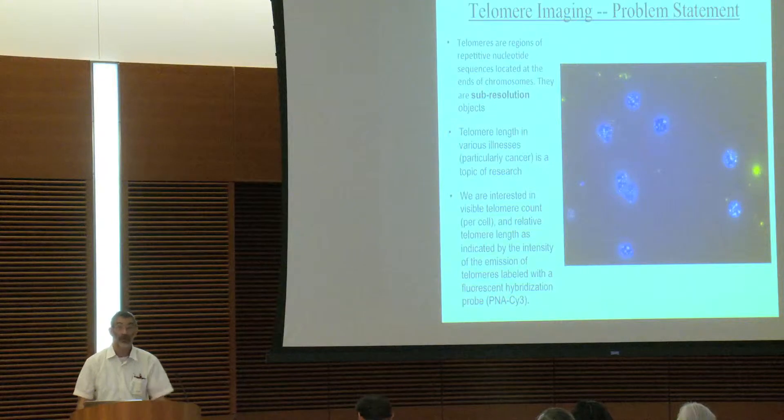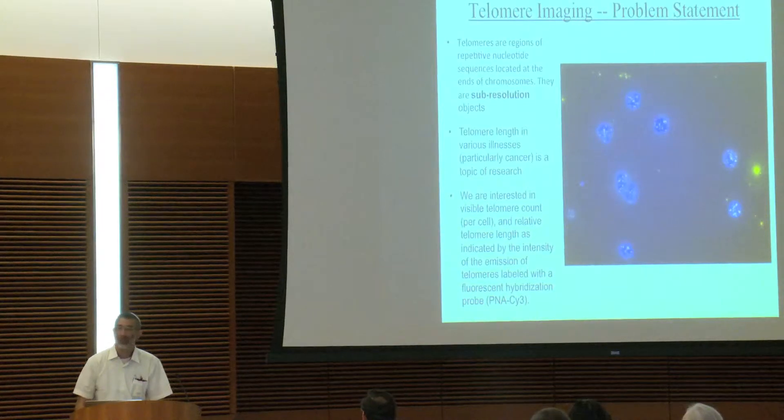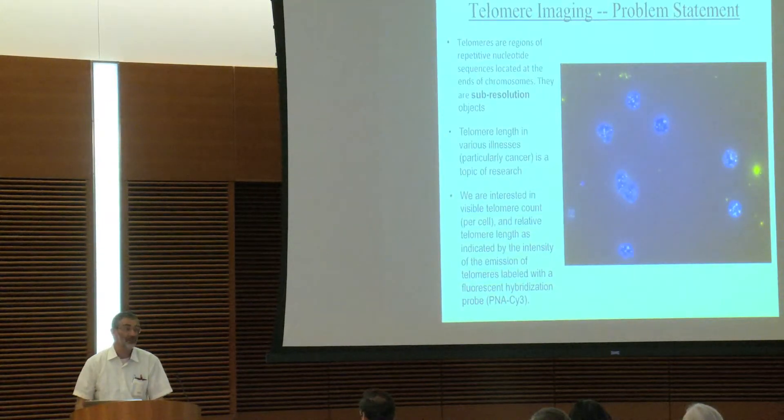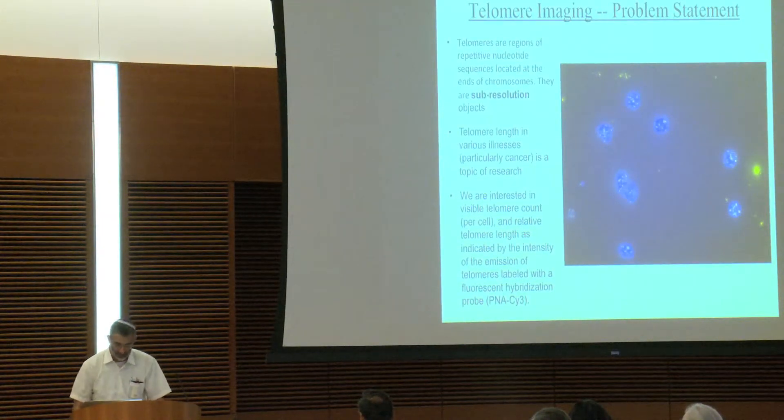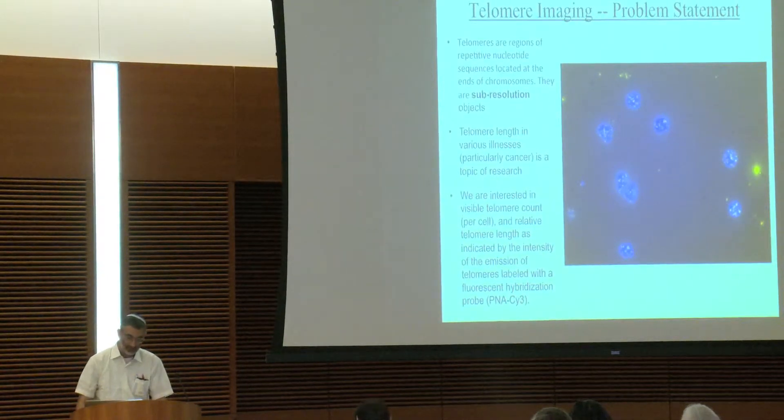Just for your aside, quantitative fluorescence microscopy is incredibly difficult to do, and if you can avoid it, try it. But if you can't avoid it, then stick with morphology and counts and things like that. But if you still can't avoid it, then bite the bullet and do the controls required to say something about intensity.